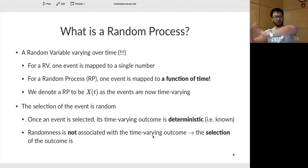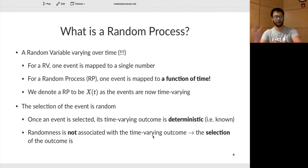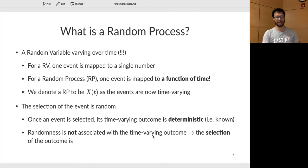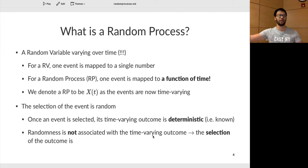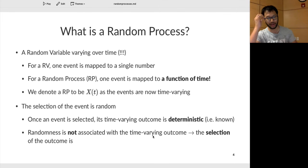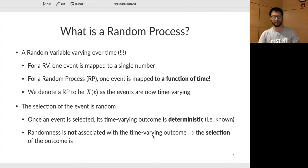So the difference between a random variable and a random process: with a random variable, you're mapping an outcome to a single number that doesn't change — it's independent of time. With a random process, as soon as you choose one event, that event is a function of time, but that function is well-known once you choose that particular outcome.